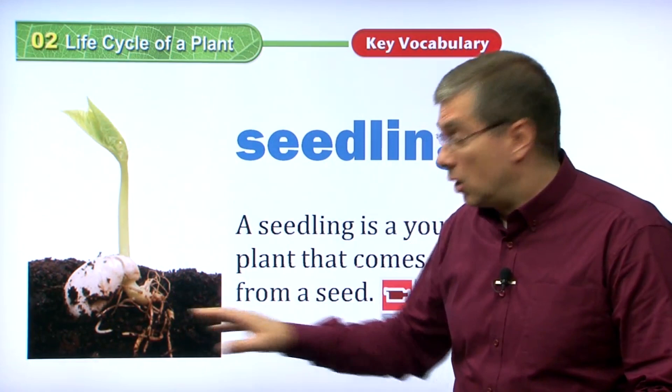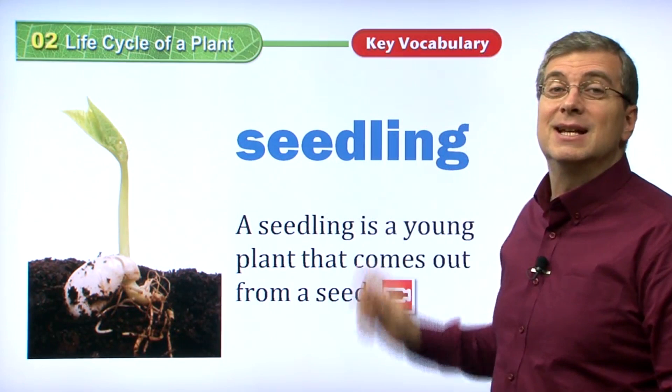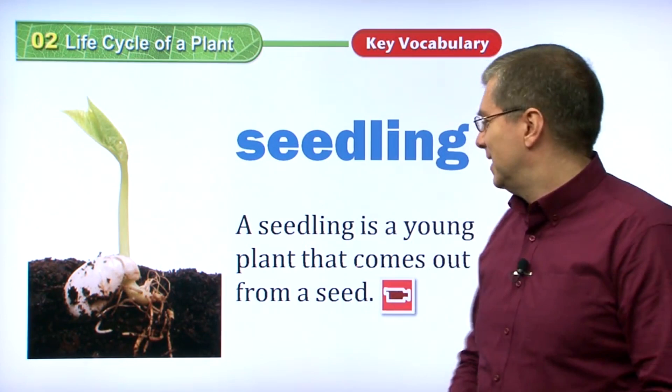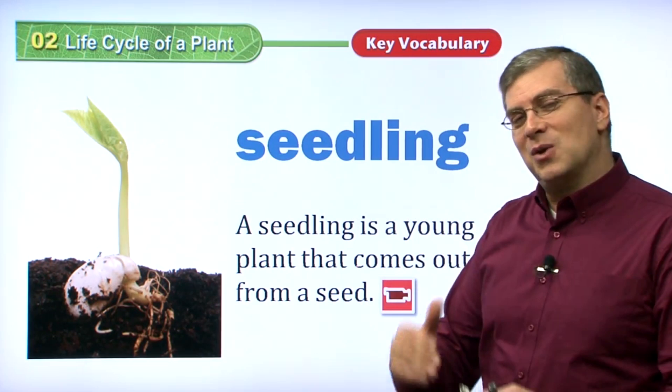A seedling — when we put the seed in the ground, after a while, if we give it good soil and some water, a very small plant starts to grow. That is called a seedling. A seedling is a very young plant, like a baby plant, that comes out from a seed.